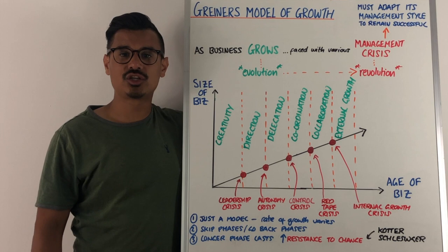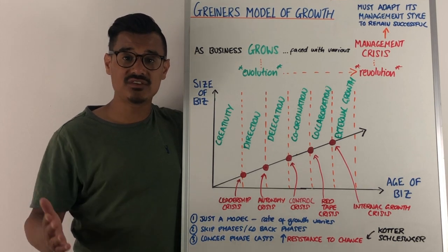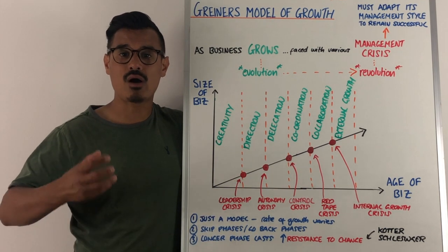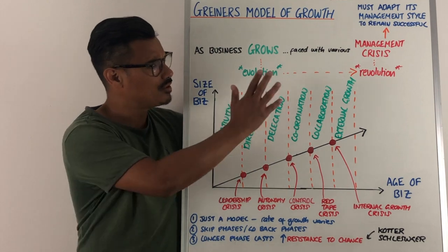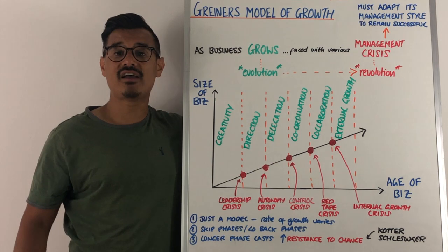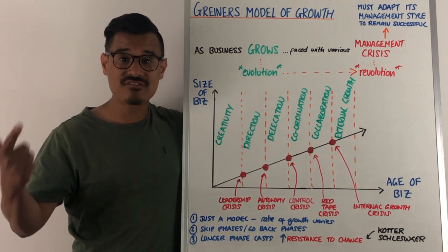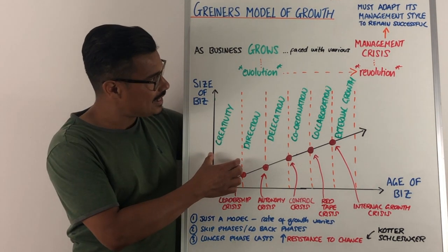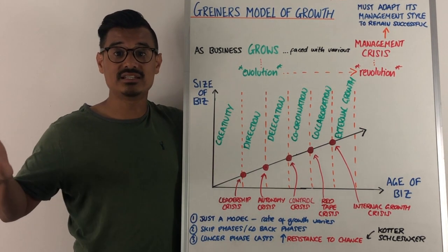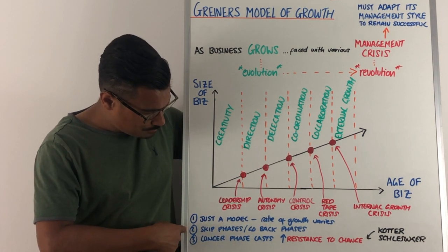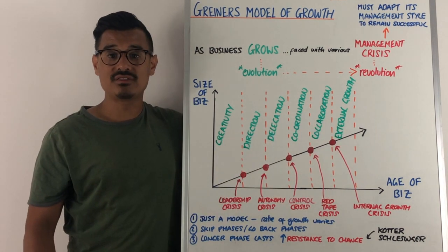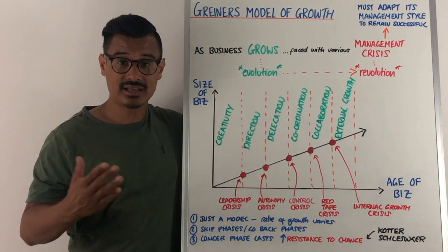This leads to the crisis of internal growth — the business is unable to grow internally because it can't generate innovative solutions. The solution is external growth, leading to the sixth and final stage: growth through extra-organizational solutions. The business looks to grow using mergers, takeovers, or outsourcing. Regarding criticisms of the model: it is just a model and businesses won't follow it perfectly. The rate of growth varies between businesses and industries — each evolutionary phase typically lasts three to ten years.